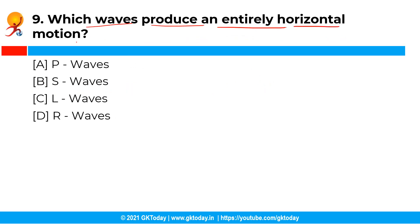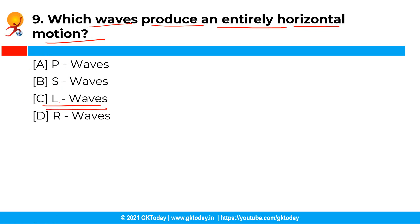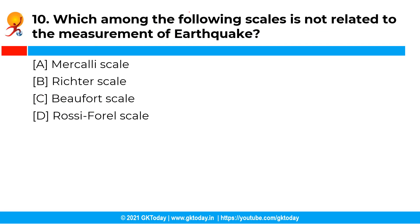The next question is: which waves produce an entirely horizontal motion? You have the following options and the correct answer is option C, that is L waves. The love waves, also called L waves, lead to horizontal shifting of the earth. These waves are confined to the surface of the earth and produce an entirely horizontal motion.